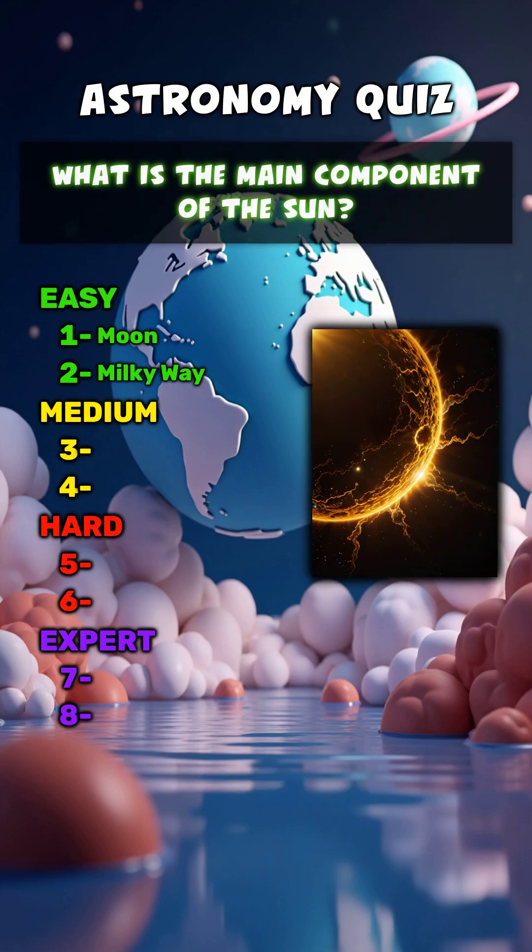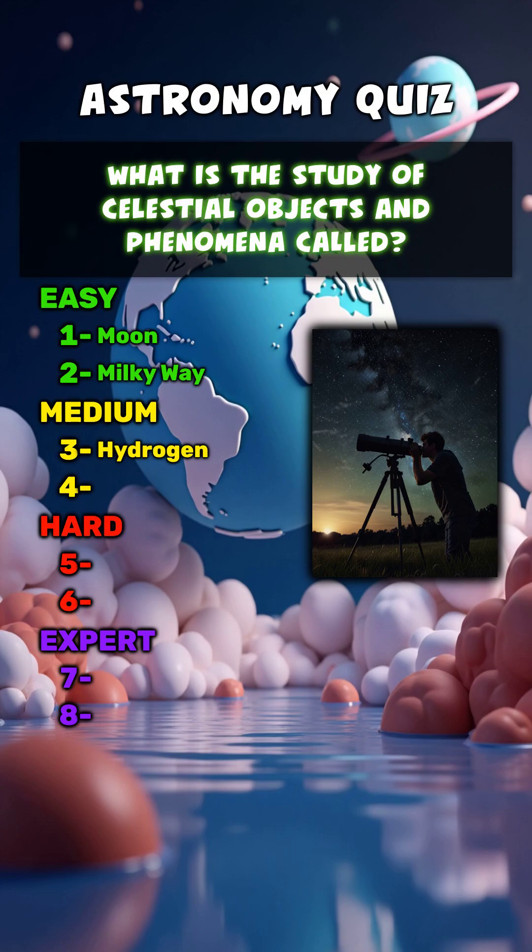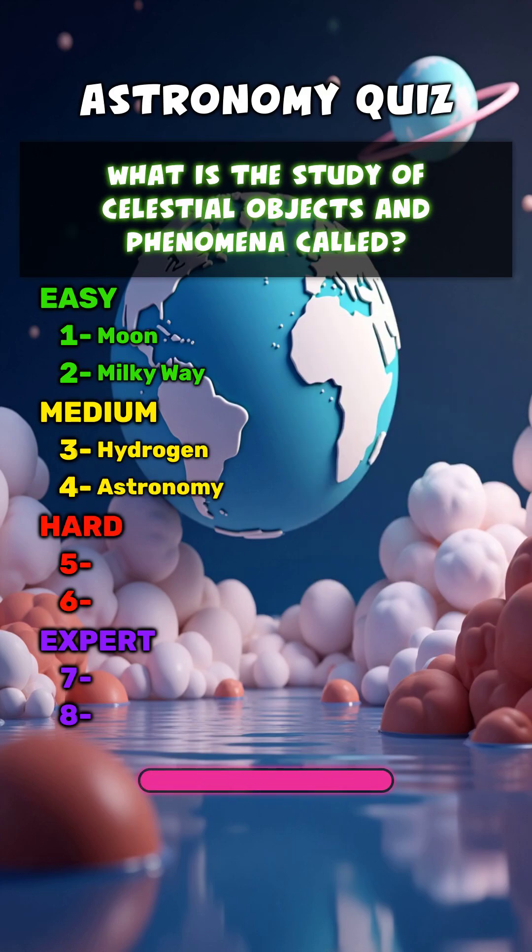What is the main component of the sun? Hydrogen. What is the study of celestial objects and phenomena called? Astronomy.